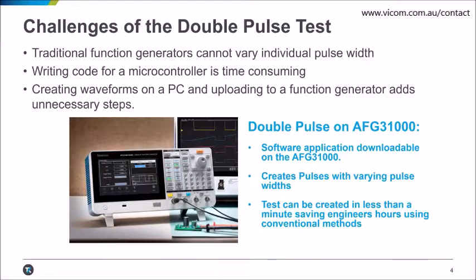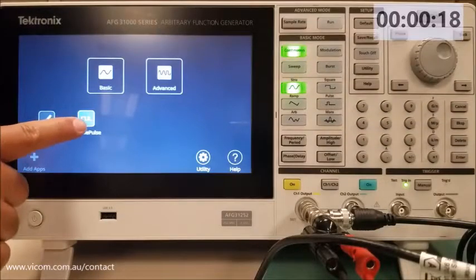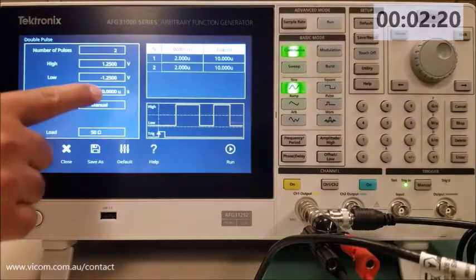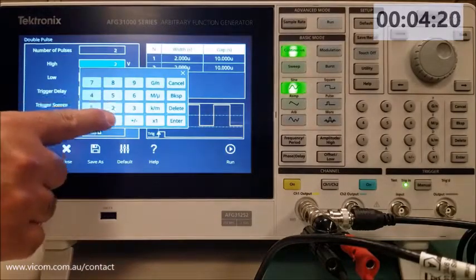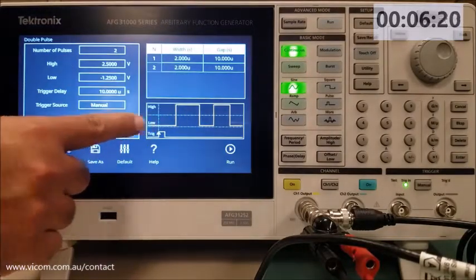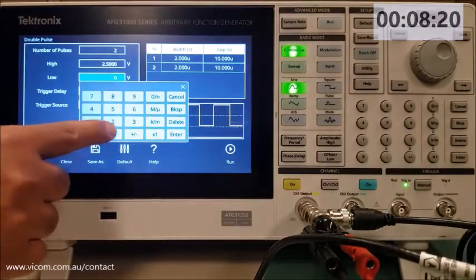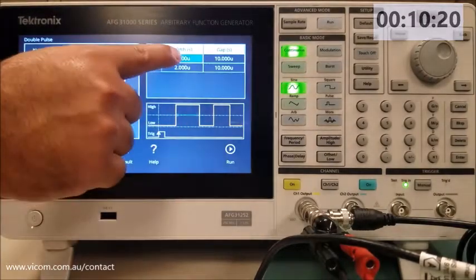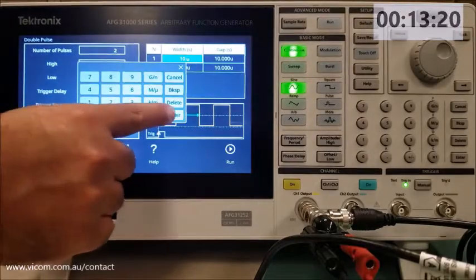The software is downloadable and users can create their custom pulses in less than a minute. The app can be found on the home screen and offers a variety of pulse configuration options, including the number of pulses, high and low voltage magnitude, trigger delay, trigger source, and the pulse width settings.